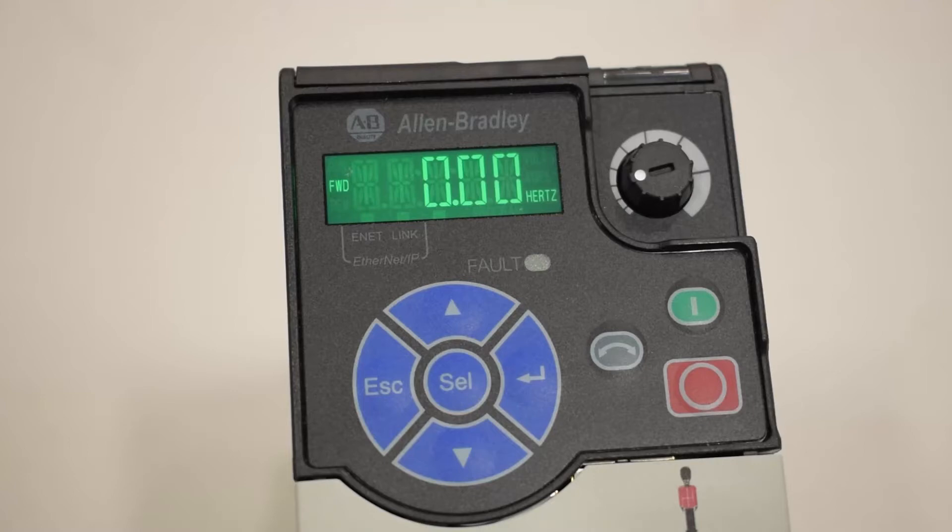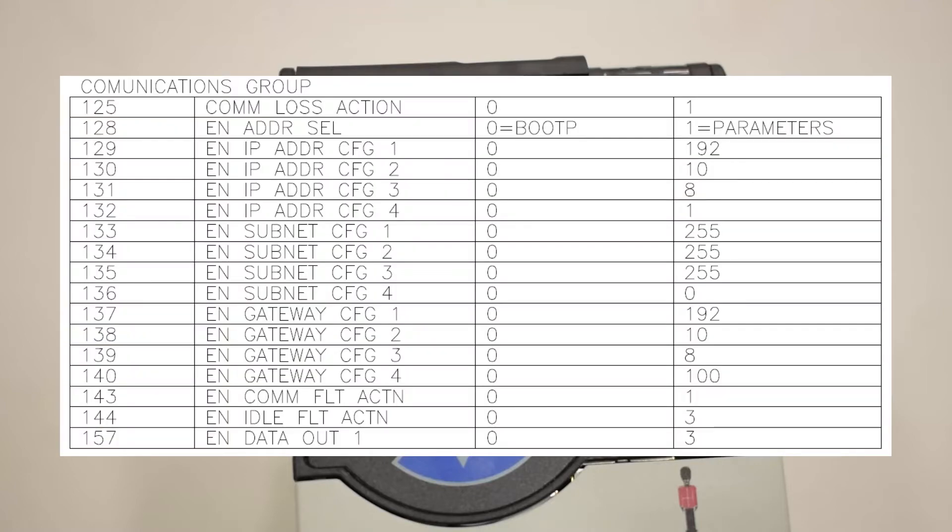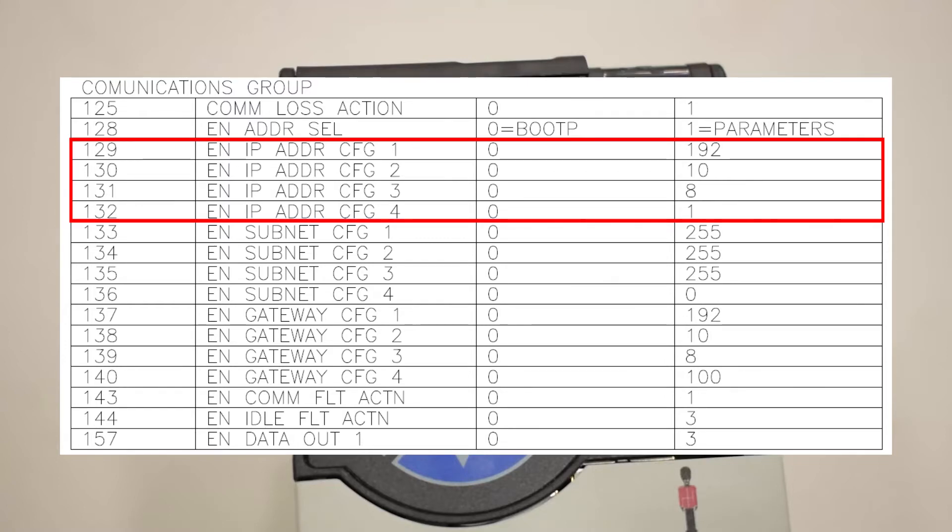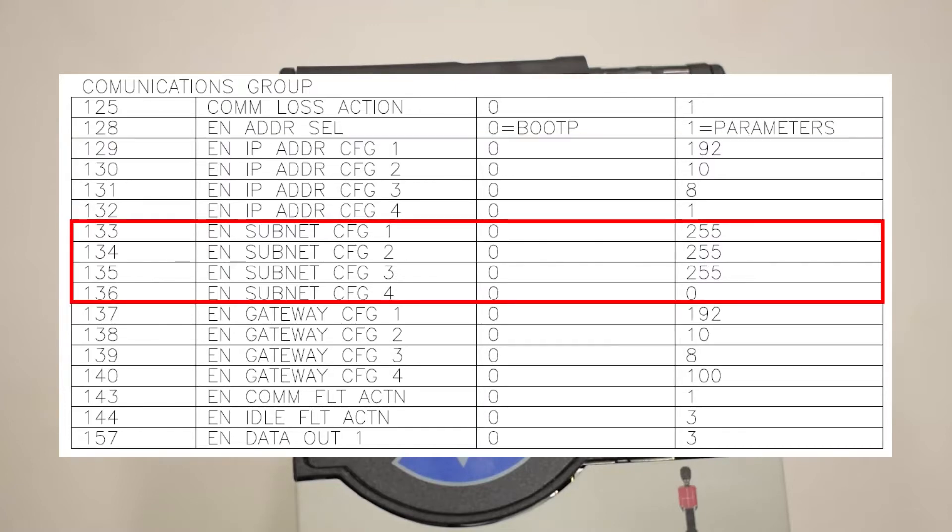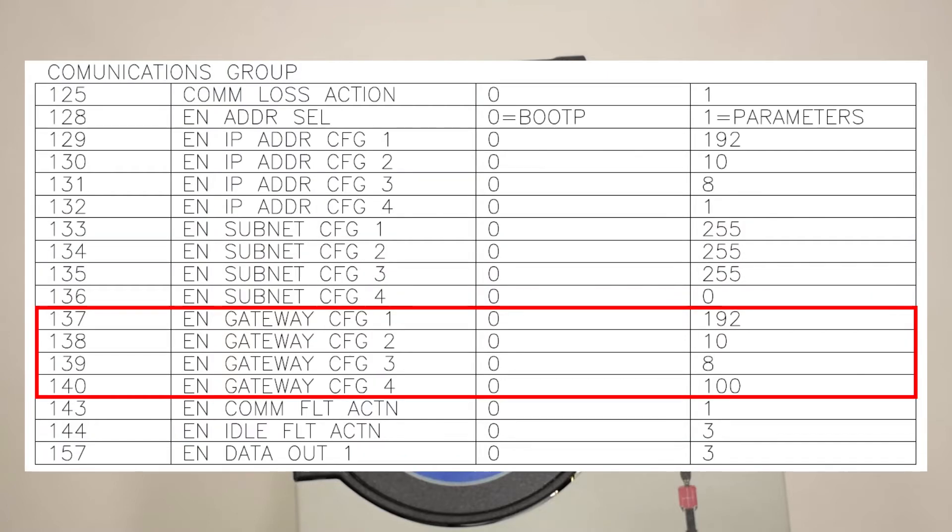Navigate to the VFD parameters table on the element control drawings. Parameters C129 through C132 are used to set the VFD's IP address. Parameters C133 through C136 are used to set the VFD's subnet mask. Parameters C137 through C140 are used to set the VFD's gateway address.